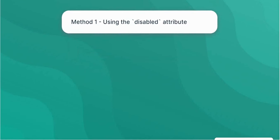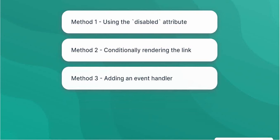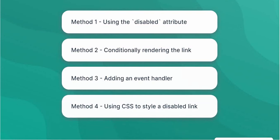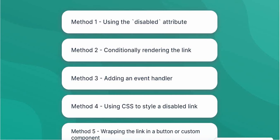Method 1: Using the disabled attribute. Method 2: Conditionally rendering the link. Method 3: Adding an event handler. Method 4: Using CSS to style a disabled link. Method 5: Wrapping the link in a button or custom component.